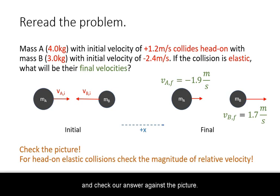We re-read the problem and check our answer against the picture. Note that the final velocity of the first mass turned out to be negative. This means that instead of it going to the right after the collision, it actually was going to the left.